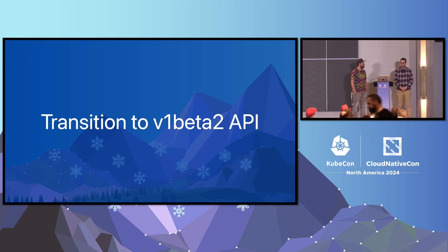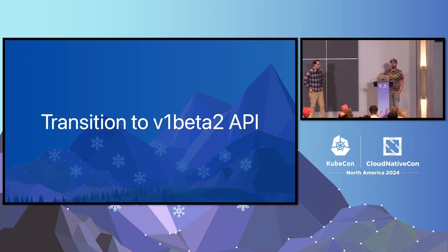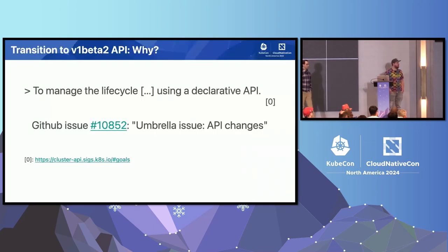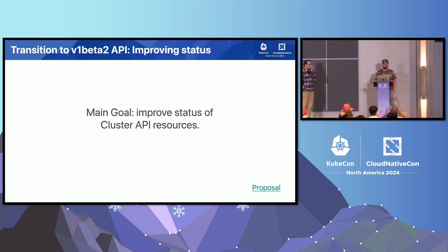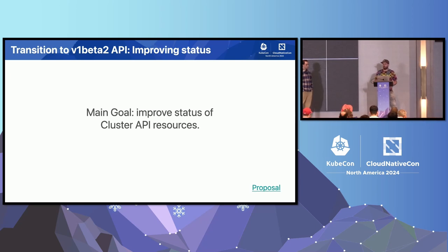What about the future? Currently one big point is the transition to, hopefully, a v1 API version. The first step is to get to v1beta2, because we're currently at v1beta1. We define one of our goals as having a declarative API to manage the lifecycle of all clusters, and we have a huge umbrella issue regarding API changes we want to do. So the main goal with v1beta2 is to improve the status of Cluster API resources, with the target of making it easier to understand what state your cluster or machines are in, and making it easier to troubleshoot issues and bubble them up to users without requiring them to know all the internal details of how Cluster API works.